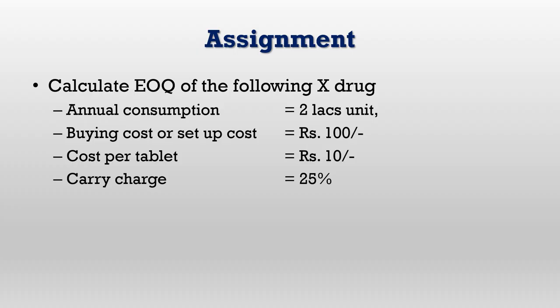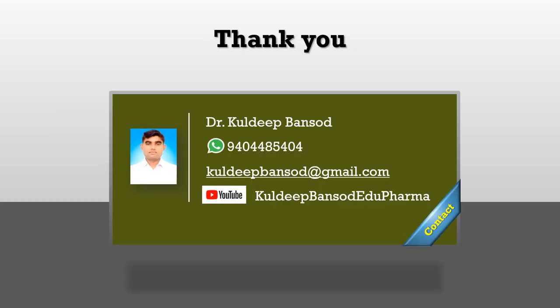Here is a quick assignment for you. Calculate the economic order quantity from the following inputs: annual consumption is 2 lakh units, buying cost or setup cost is 100 rupees, cost per tablet is 10 rupees, and inventory carrying percentage is 25 percent. Calculate EOQ using the formula: square root of 2AB divided by CS, and post your answer in the comment box. If you like this video, do not forget to subscribe to the channel and watch more videos on my YouTube channel, Kuldeep Banshod Edupharma. Till then, happy learning!